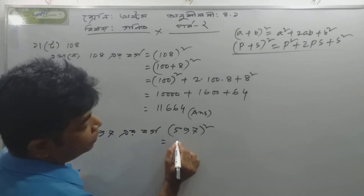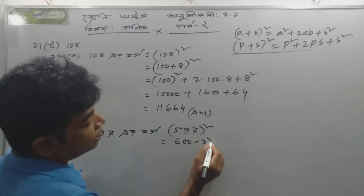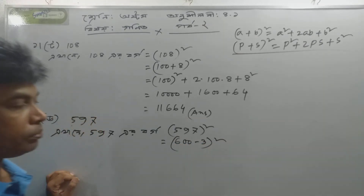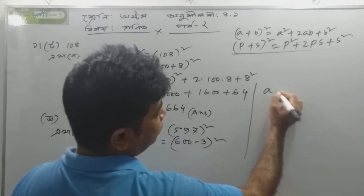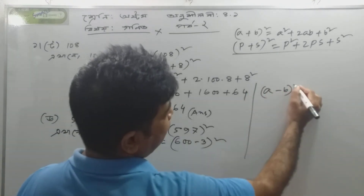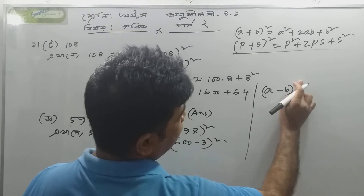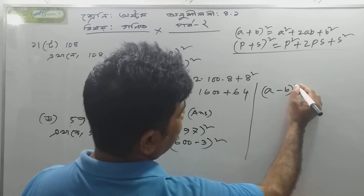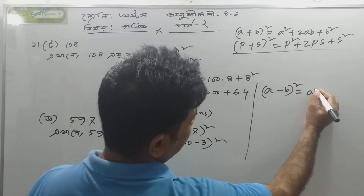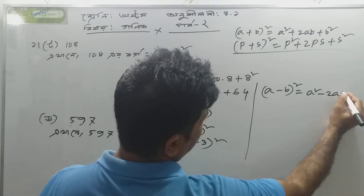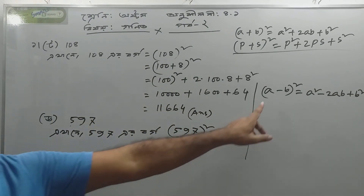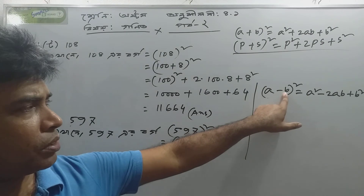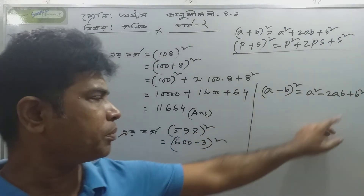Today we will show you a minus b whole square. We will show you a minus b whole square equals a² minus 2ab plus b².